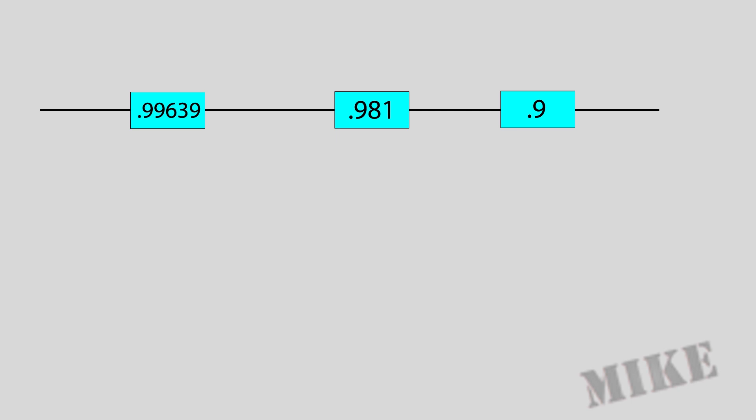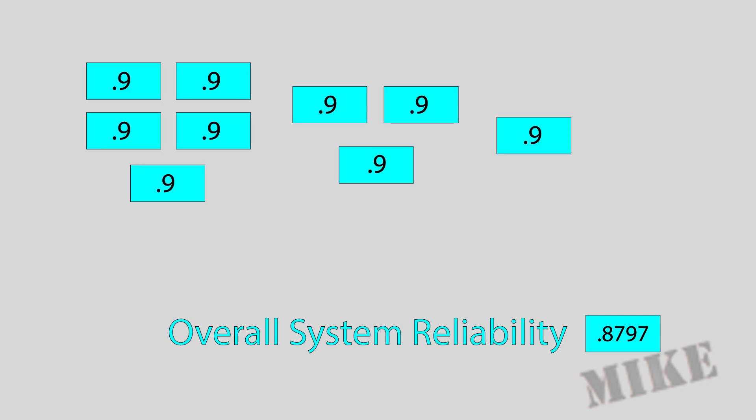We now have three component series systems, so we just multiply it all together to get the overall system reliability of 87.97%. Now, let's look at the original system.